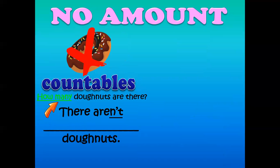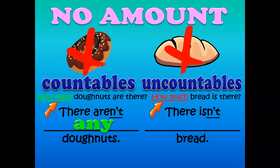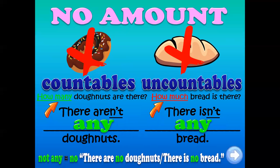No amounts. For example: how many donuts are there? Donuts are countable — one donut, two donuts, three donuts. How many donuts are there? There aren't any donuts — here is the negative. No more donuts. For uncountables: how much bread is there? Remember, bread is uncountable in English — in Spanish it's countable, but in English the word bread is uncountable. There isn't any bread. You can also say: there are no donuts, there is no bread. 'Any' is for negative sentences — it doesn't matter if it's singular or plural, countable or uncountable.